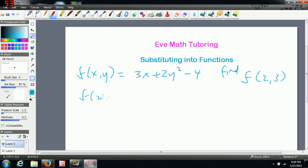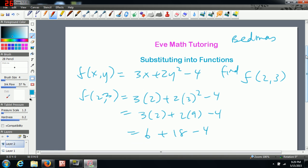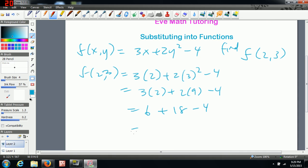So in this case, f of 2, 3 is going to be 3 times 2 plus 2 times 3 squared minus 4. So then you just work this out using BEDMAS. So this becomes 3 times 2 plus 2 times 9 minus 4. 6 plus 18 minus 4. And when you work that out, you get 6 plus 18, which is 24, minus 4. So the answer is 20.